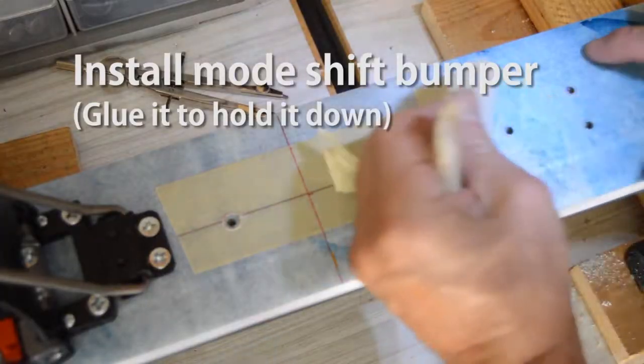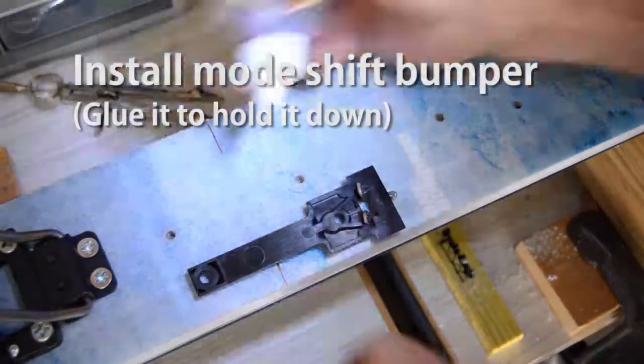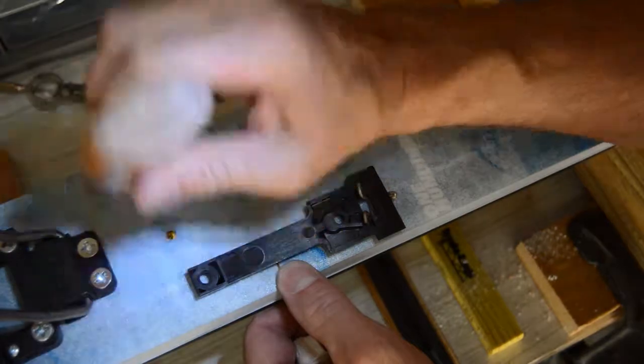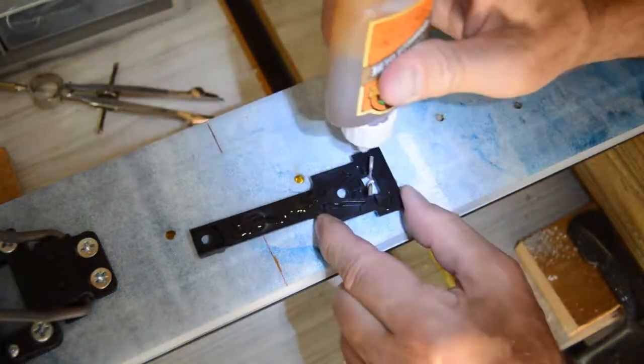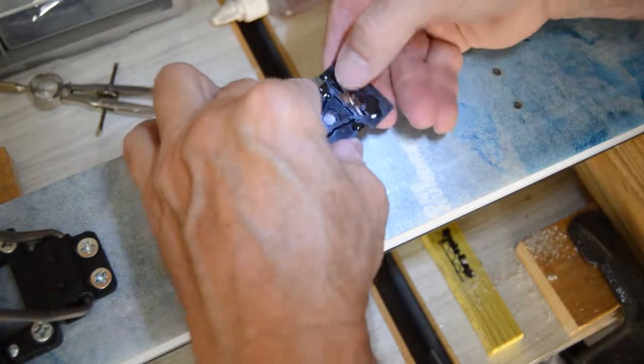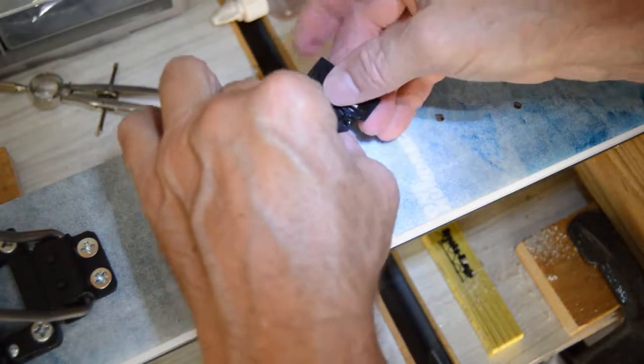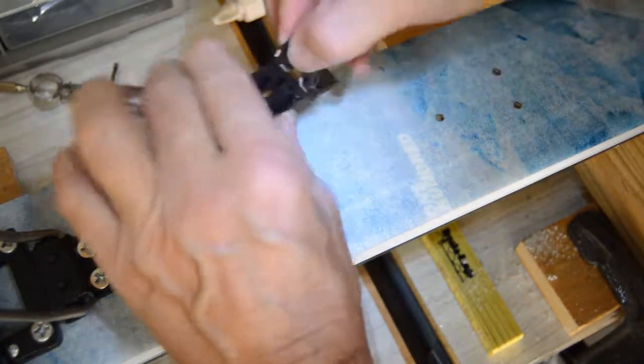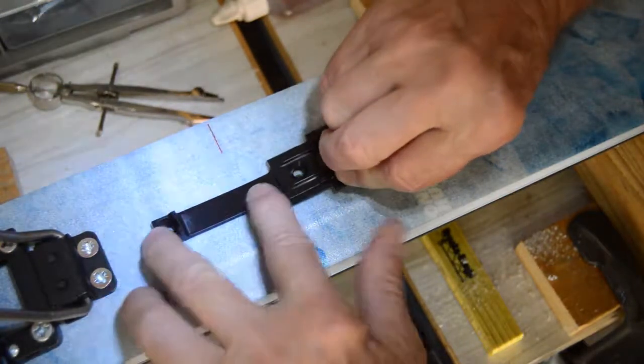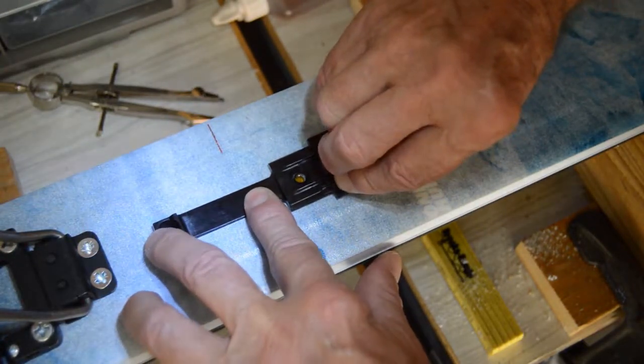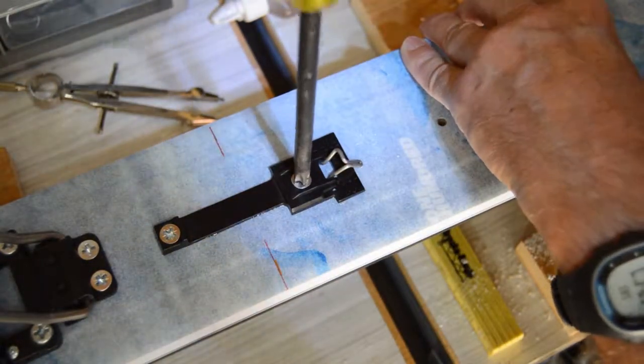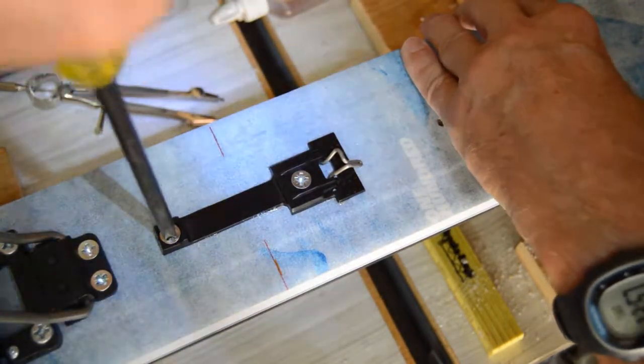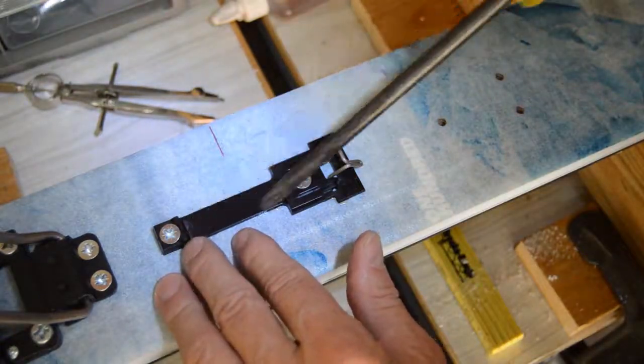And now before you add the springs and the spring box, it's a good time to put in the shift bumper because you're going to want that actually. And I put glue also on the base of the shift bumper because it tends to bow up sometimes. And that can cause the spring box to jump out of tour mode. You don't want that to happen. So I just glue it down.